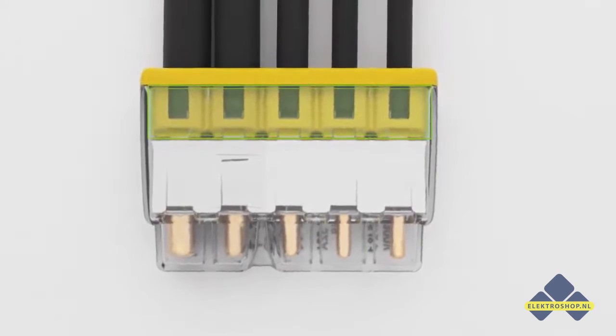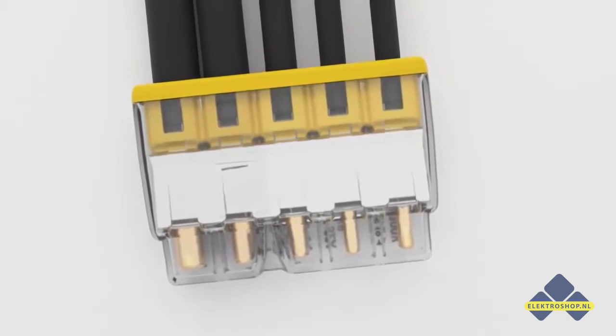The viewing port in the housing on the non-labeled side allows incorrectly stripped conductors to be easily recognized.